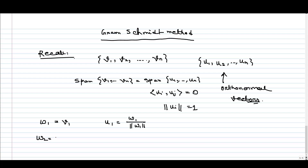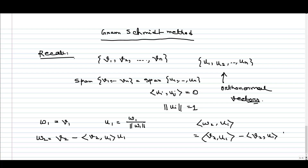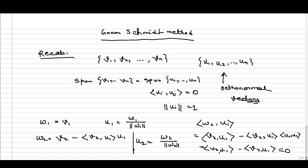For the second vector w2, we take v2 and subtract the inner product of v2 and u1, multiplied by u1, and subtract this from v2. If we calculate the inner product of w2 and u1, we get v2·u1 minus v2·u1 times u1·u1. Since the norm of u1 is 1, the inner product of u1 and u1 is 1, so we get v2·u1 minus v2·u1, which equals 0. So we get a vector which is orthogonal to u1. Then u2 is w2 divided by the norm of w2, normalizing the vector.